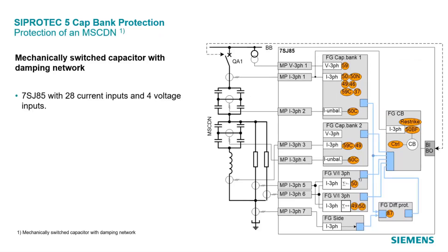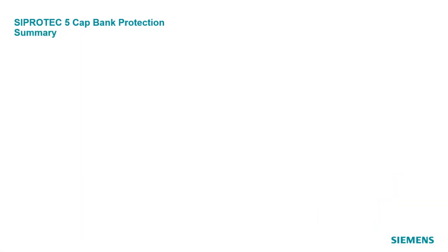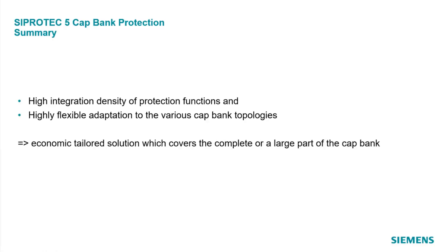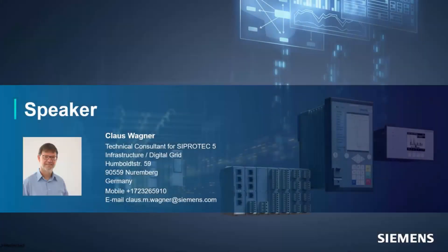Finally, we see a possible structure with 28 current inputs for an MSCDN — a mechanically switched capacitor with damping network. This setup is available in ZipROTEC 5 as a predefined application template, so with a few clicks you have a device configuration exactly for this example. ZipROTEC 5 capacitor bank protection stands for a high integration density of protection functions and a highly flexible adaptation to the various capacitor bank topologies. Both features provide an economic, tailored solution which covers the complete capacitor bank or a large part of it. Thank you for your attention.